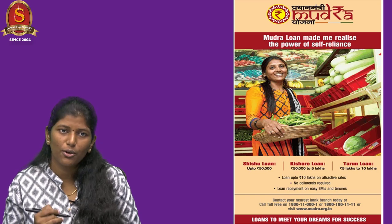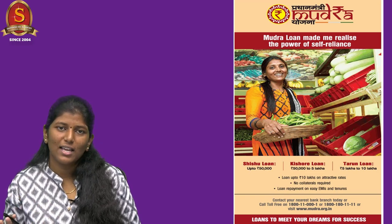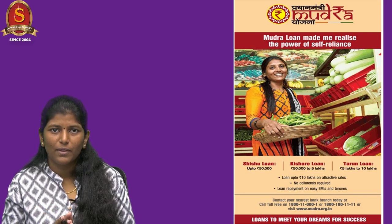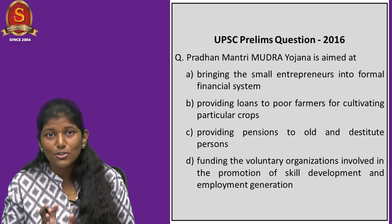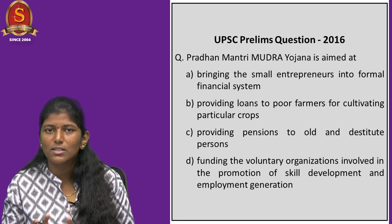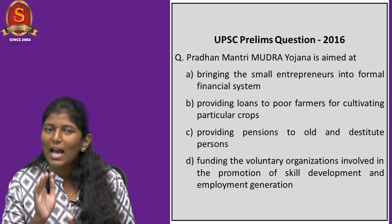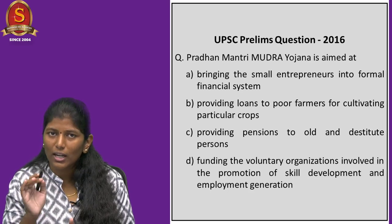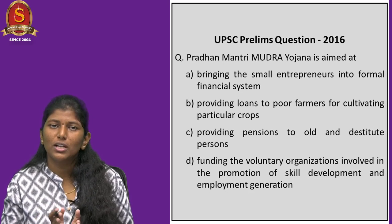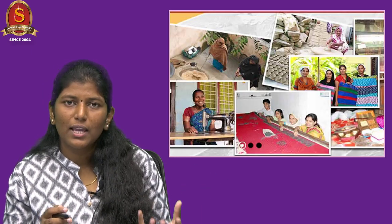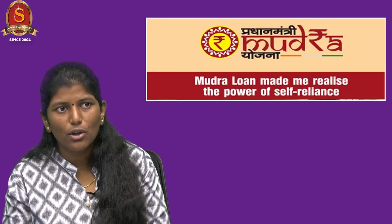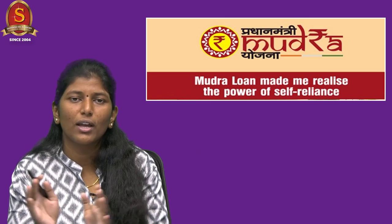Let me give you another proof. Now look at this ad — it is about the Mudra Yojana. Carefully analyze the ad and look at even the images given in the ad. Now look at this question, also taken from the 2016 prelims. If you had looked at the ad carefully and analyzed it, you can easily say the answer for this question is option A. The Mudra Yojana is all about bringing small and medium scale entrepreneurs into the financial sector, so if you look at the topic of the ad itself, you can answer this question. Don't just merely look at the ad — analyze the ad.